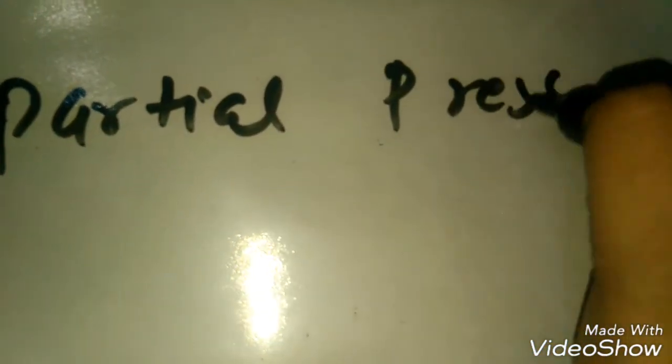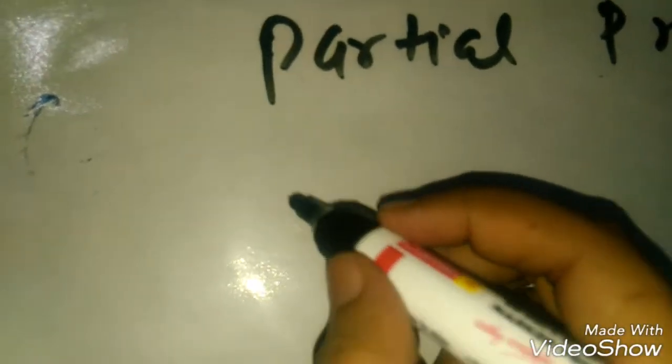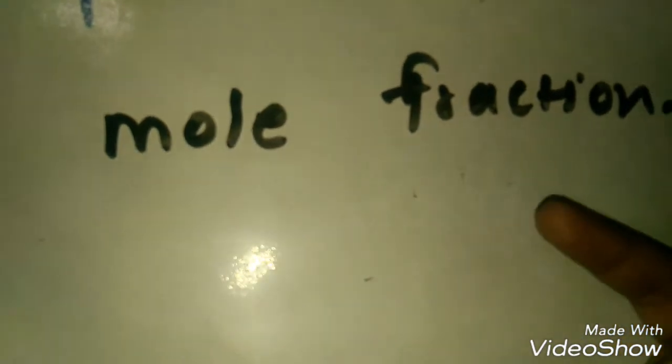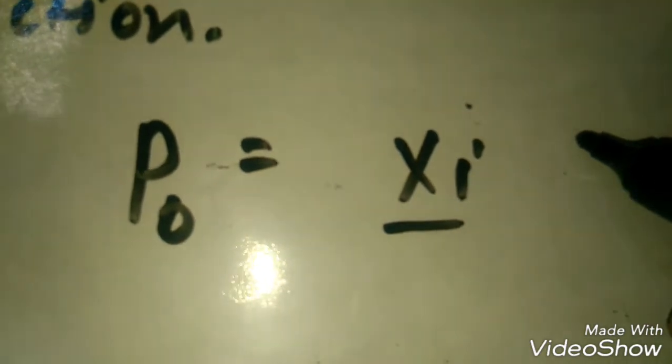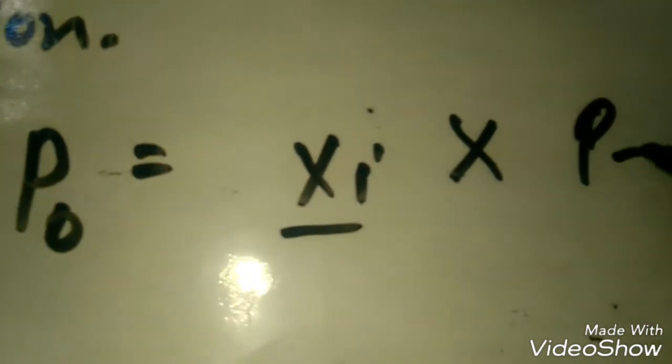Next is partial pressure, partial pressure in terms of mole fraction. What is P partial pressure? P0 is equals to Xi, what is mole fraction, into P total.